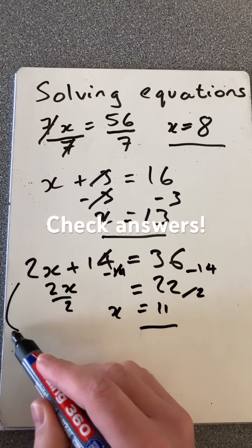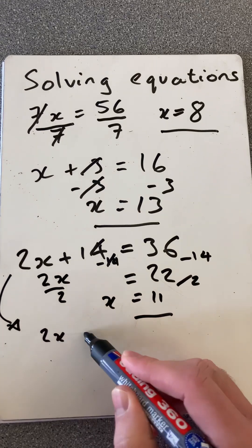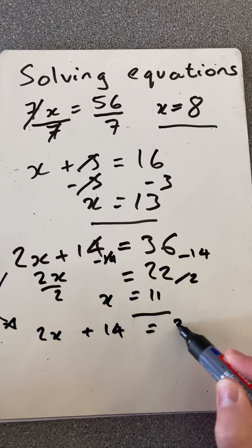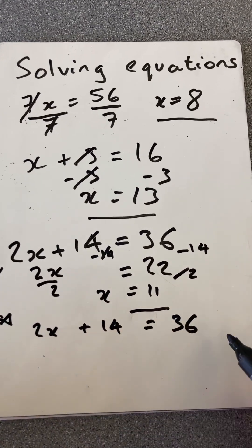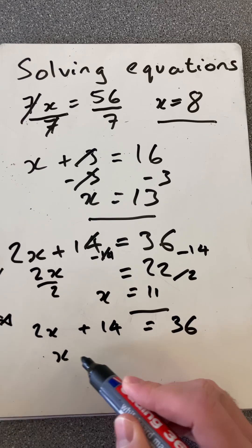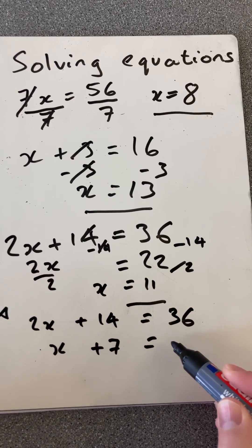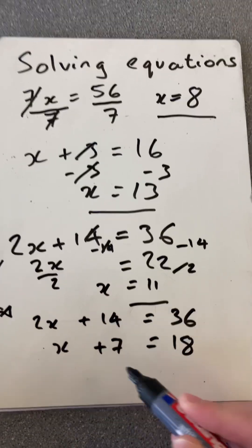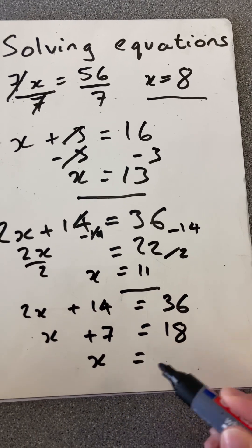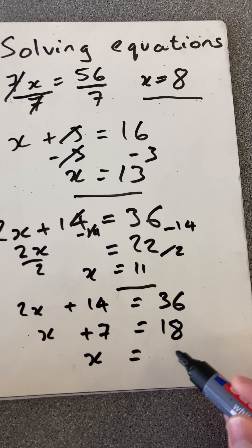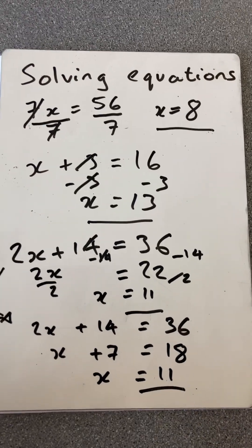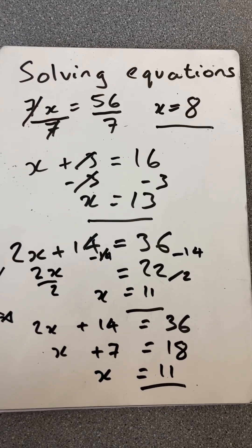Another way you might have wanted to solve this is, if you don't like big numbers like me, you might want to divide everything by 2 first, and then you get x plus 7 equals 18. And then you can see that x will equal 18 minus 7, which is 11. You get the same answer. There we go. That's solving equations. Thanks for watching.